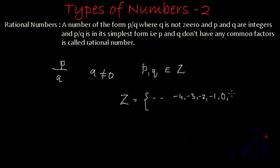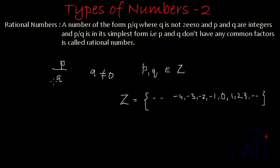Along with the negatives and zero, the set of integers also has all the positive natural numbers — that means 1, 2, 3, and so on. So any number which can be represented in the form P by Q is called a rational number.